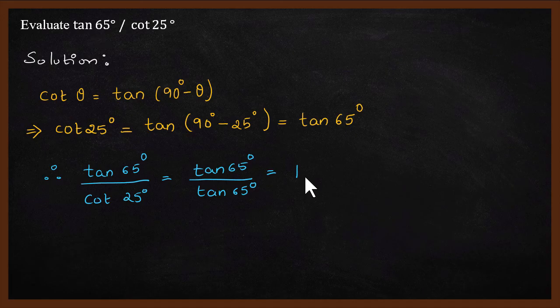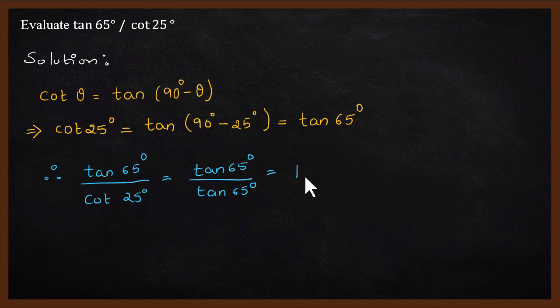You can prove that tan 65° divided by cot 25° is 1 using complementary angle formula. Hopefully you understood how to solve this problem. Thanks for watching this video.